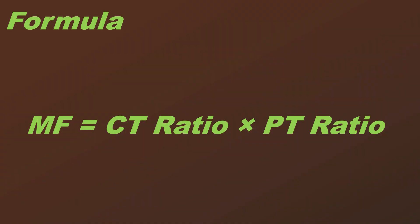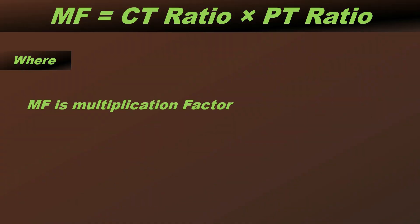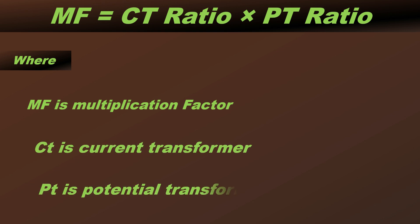Where MF is multiplication factor, CT is current transformer, PT is potential transformer, CT ratio is primary current divided by secondary current, and PT ratio is primary voltage divided by secondary voltage.